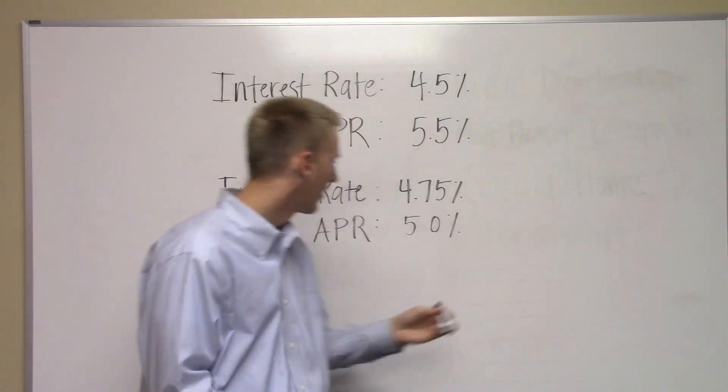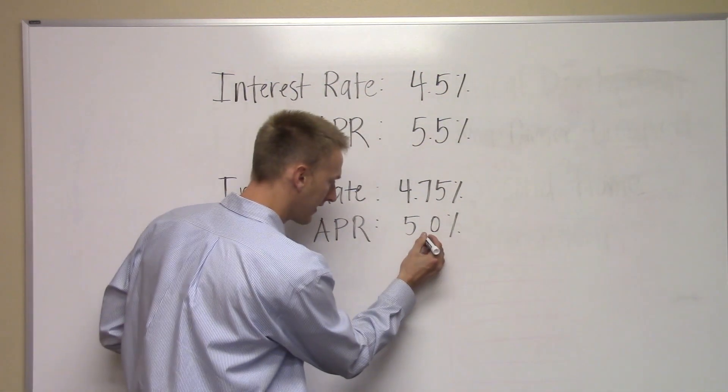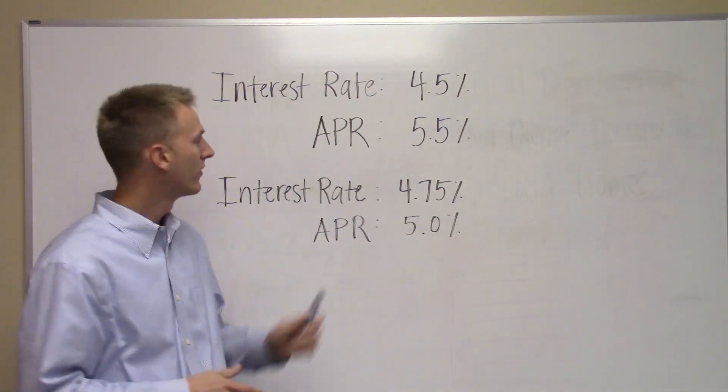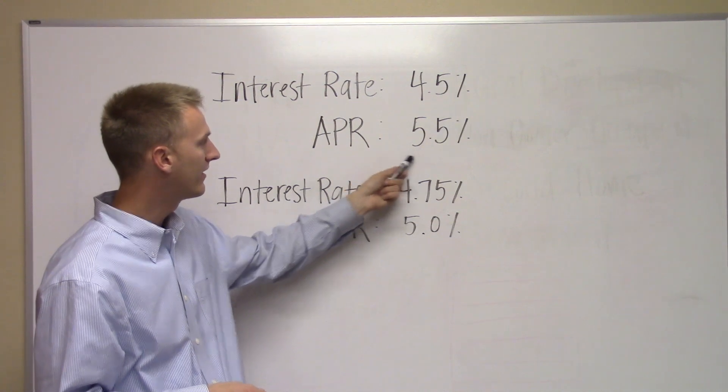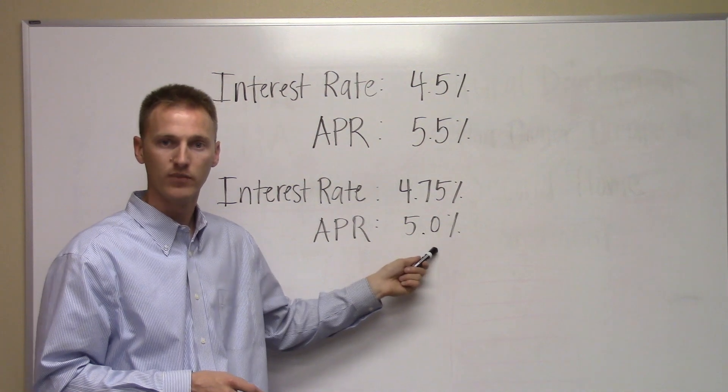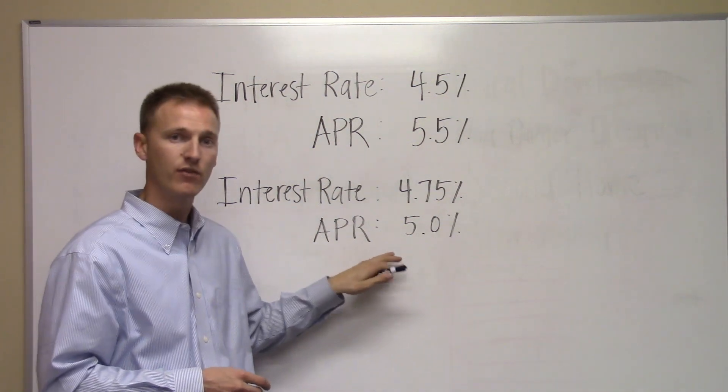But their APR—and this looks like 50 because I accidentally erased the dot—their APR is actually 5%. So as you can see, the cost of getting this loan is significantly higher than the cost of getting this loan. So this might be a better deal for you.